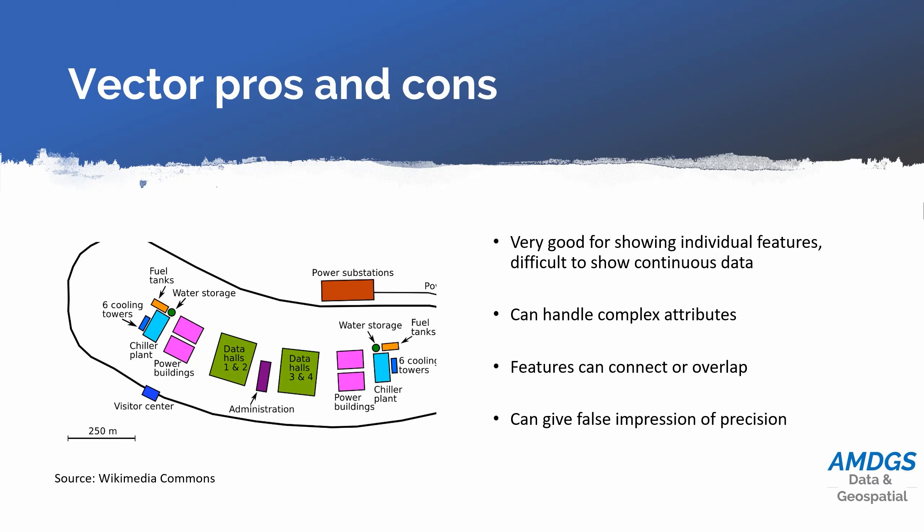The thing to be careful of with vector data is the false impression of precision it gives. If we've collected data using a GPS on a phone, that's probably accurate to within about five metres, but we can zoom in on the map and it would look as if it was accurate to within a millimetre. Data could have been collected very roughly by drawing on a paper map and then digitized into GIS, and only be accurate to within 100 metres — it would still look millimetre-precise on the map. That's the biggest thing to be aware of with vector data.